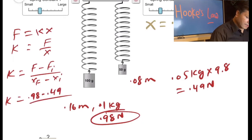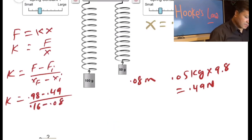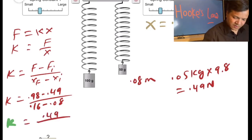So k equals 0.98 minus 0.49, and this one is 0.16 minus 0.08. So 0.98 minus 0.49 is 0.49, divided by 0.08, would be 6.125.